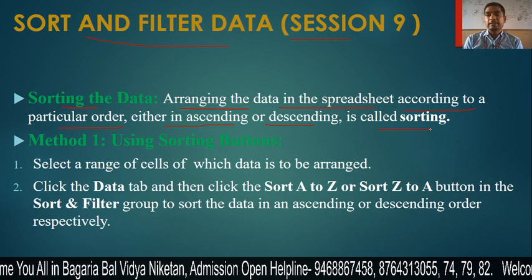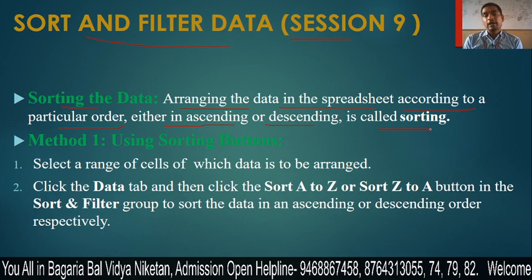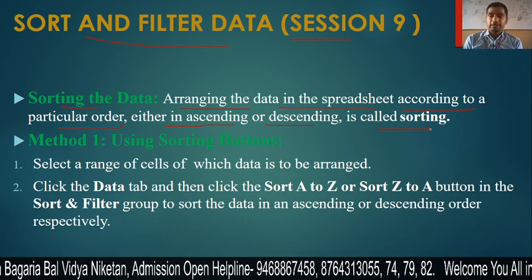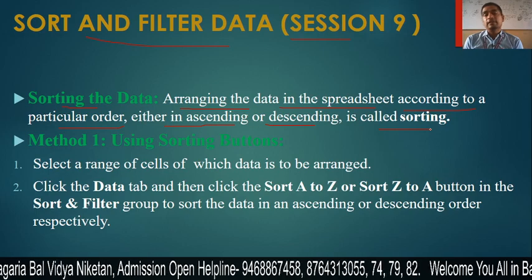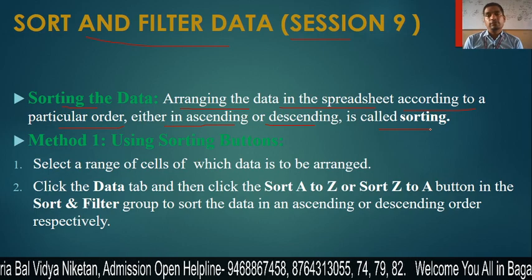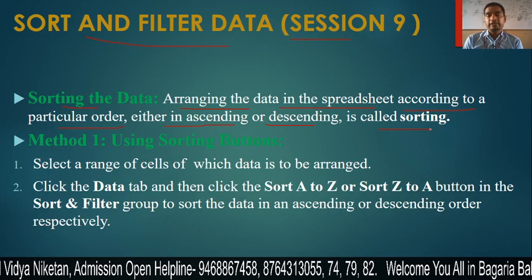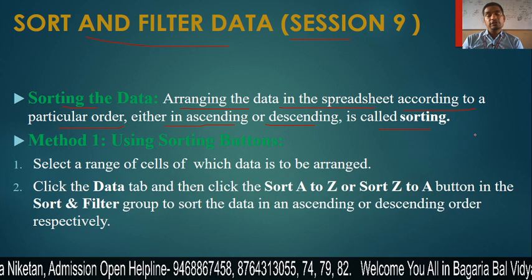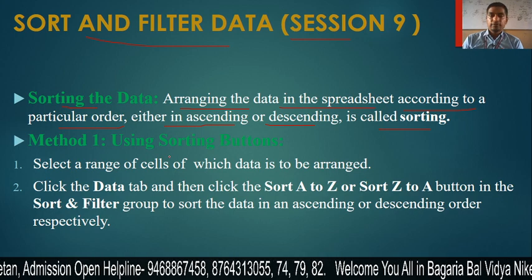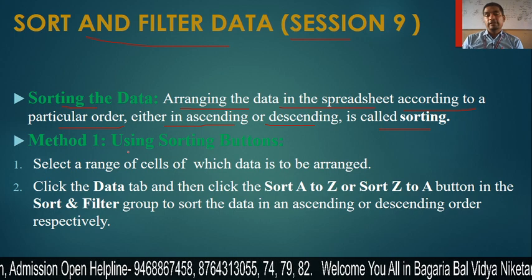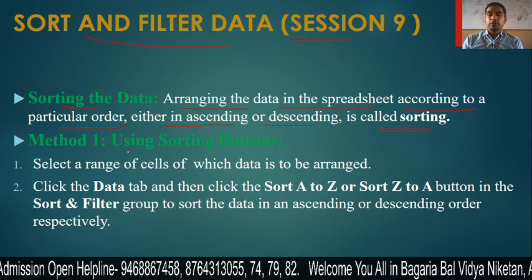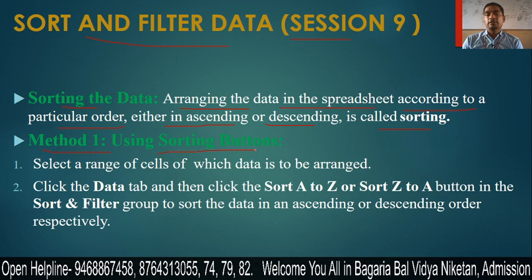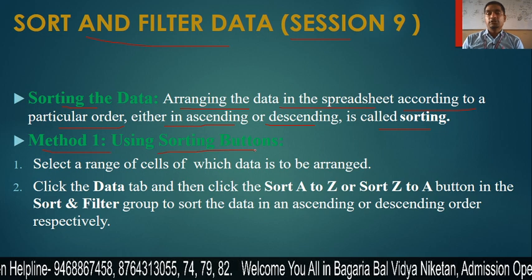Whenever you are working in a spreadsheet and you set the data in ascending or descending order, we call that data sorting. Now, how do we sort the data? Method 1 is using the sorting button.